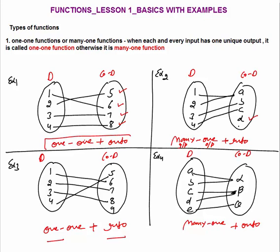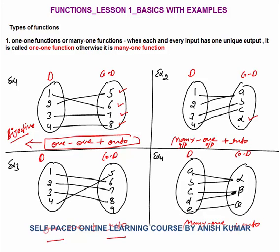Whenever a function is one-one onto, it is called a bijective function. One-one onto is called a bijective function. In an exam, you must understand what is the meaning of one-one, many-one, into and onto function. I have taken 8 examples. I hope this is absolutely clear — what is an into function, what is an onto function, what is one-one, and what is many-one.